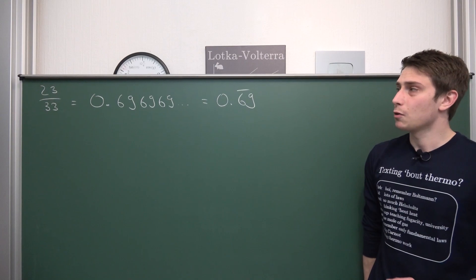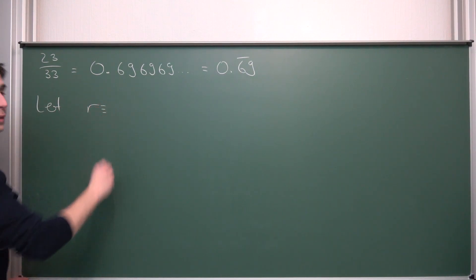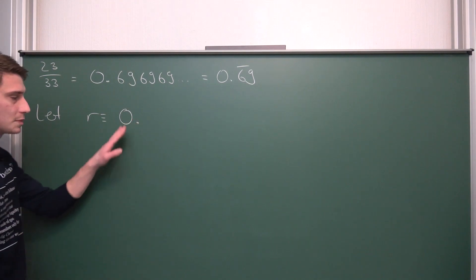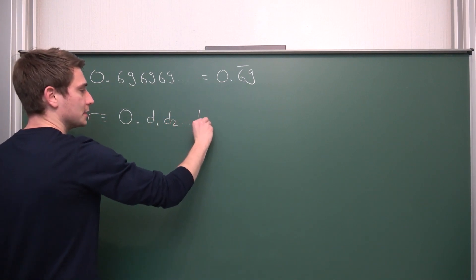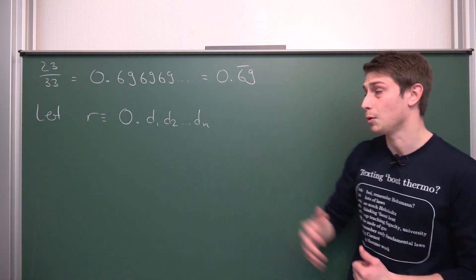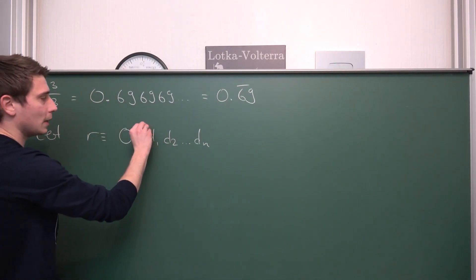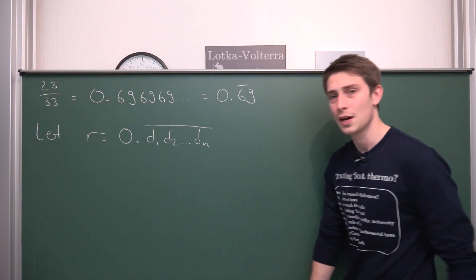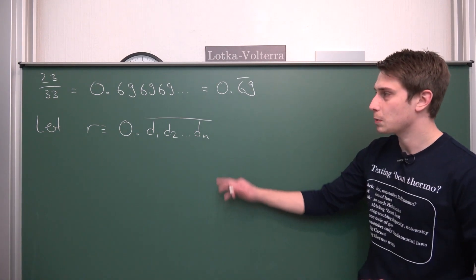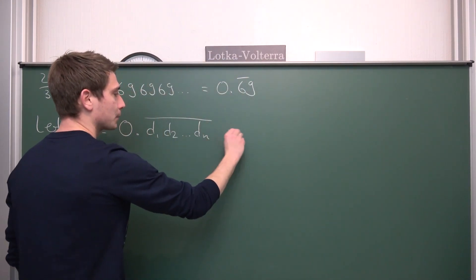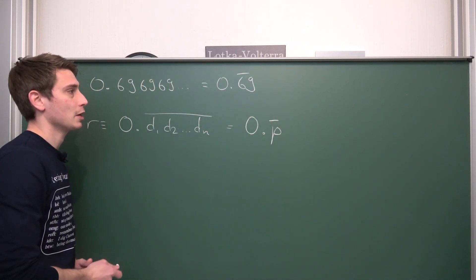So first, we are going to say we have a certain number R. Let R be defined as a repeating decimal of the form 0.d1 d2 ... dN, where those digits concatenated in the decimal places repeat over time. We'll indicate the repetition with a periodic bar over them. They appear with a certain frequency one after another, and for simplification we call the concatenation of those digits P — the periodic part which repeats up until infinity.